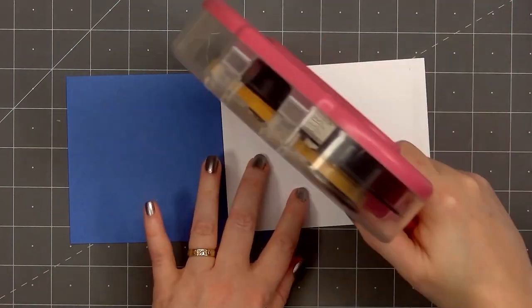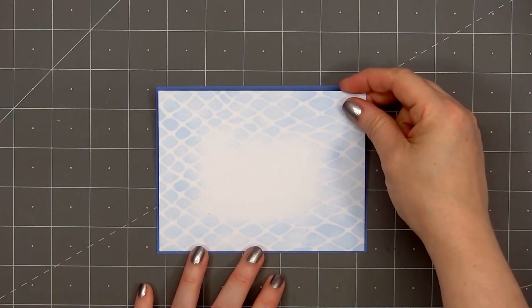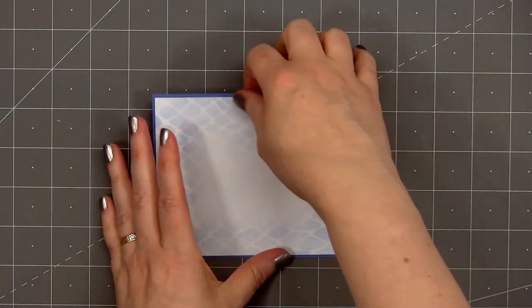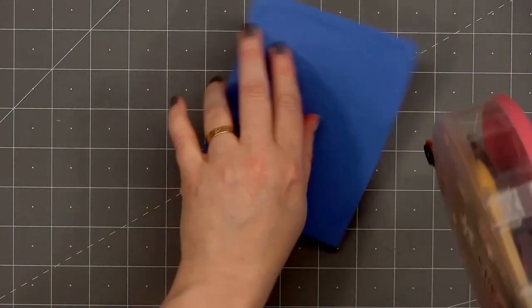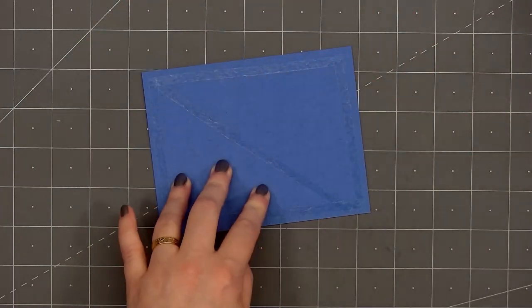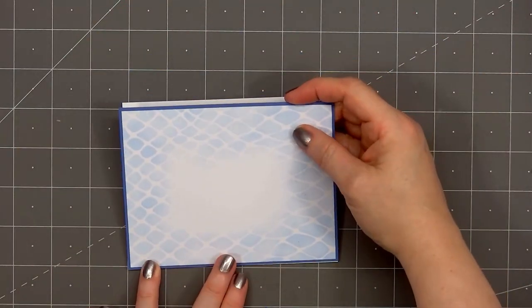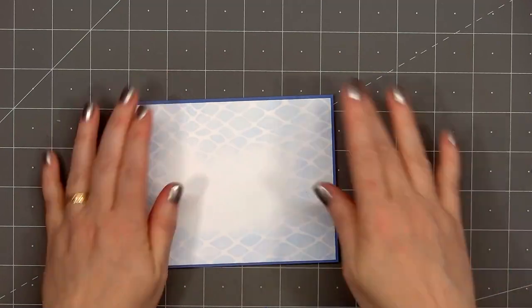I'll layer this panel on some blue cardstock, put ATG tape on the back and add my card front onto a card base. This is an American Standard A2 size card. Five and a half inches by four and a quarter inches.